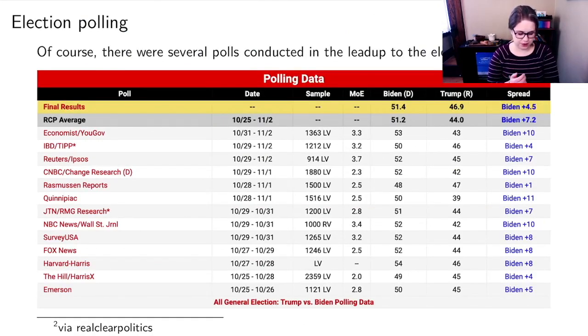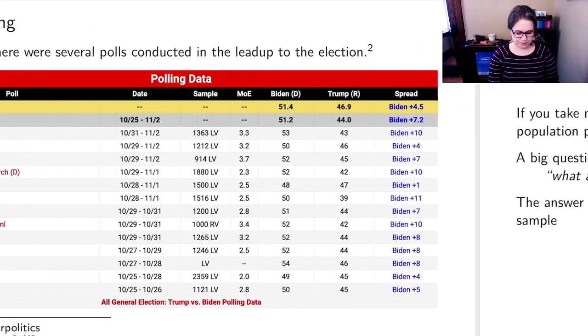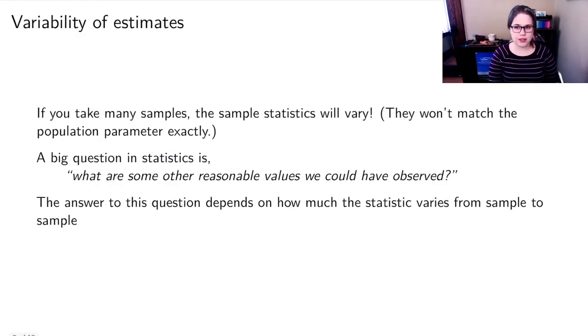But there were actually lots of polls that were conducted in the lead up to the election. So the Economist did a poll, IBD, Reuters, CNBC, Rasmussen, there's a bunch of different polls. And they have slightly different sample proportions. So in this poll, 53% said that they would vote for Biden, 50%, 52%, we've got 48% here, 49%. So some of them are larger numbers, 54%. And some of them are smaller. So there's variability. And this always happens.